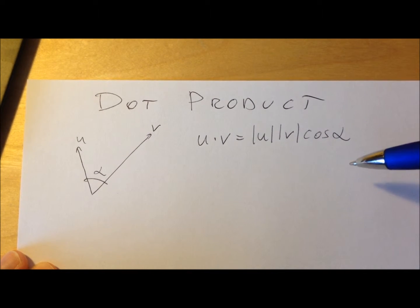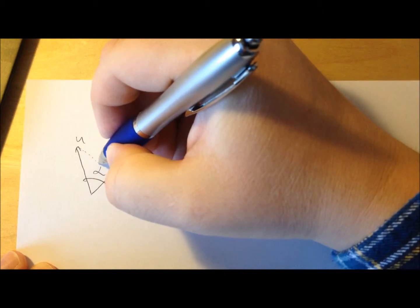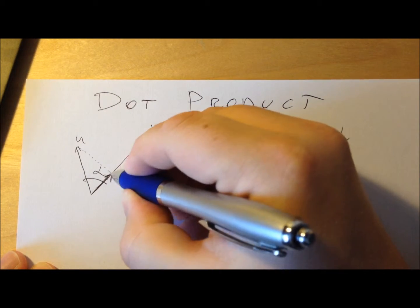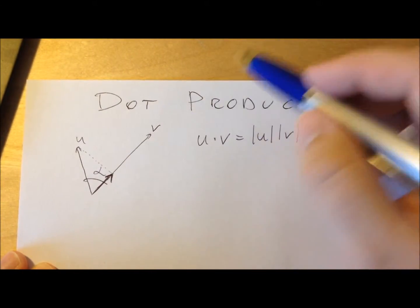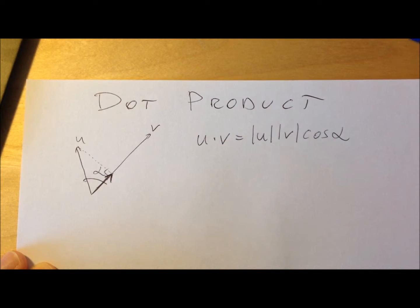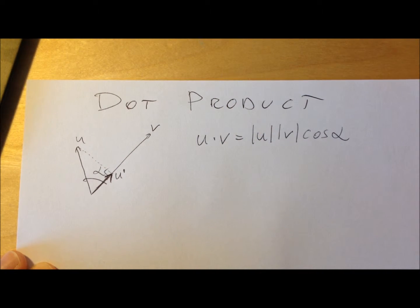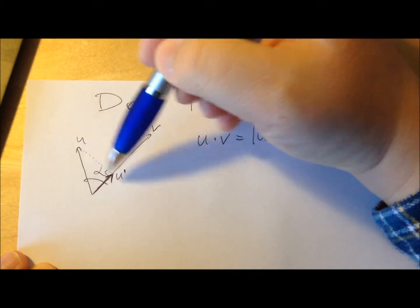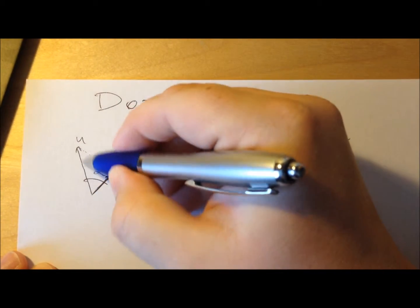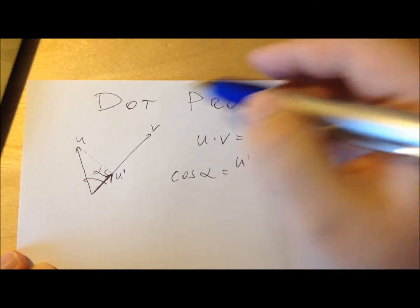The reason I am introducing the dot product is because I will be interested in calculating the length of the projection, or projected vector. So this is the vector u projected onto the direction determined by the vector v. This projection is created such that here is the right angle, and the question is what's the length of the vector u prime shown here. From trigonometry, we have a right triangle here.